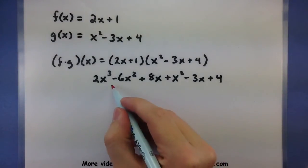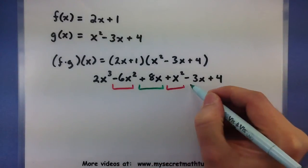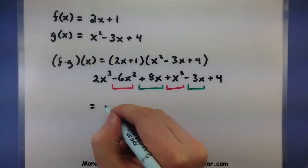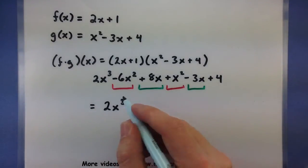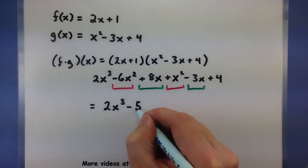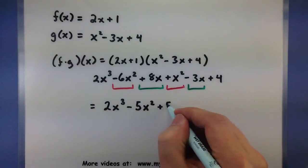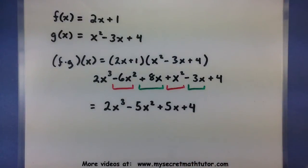And looking through this, you can see that we have a couple of terms that are squared. So we want to make sure that we combine those ones. And it looks like we also have a couple of terms that are just normal x's. So we'll put those together as well. So 2x cubed minus 5x squared plus 5x plus 4.